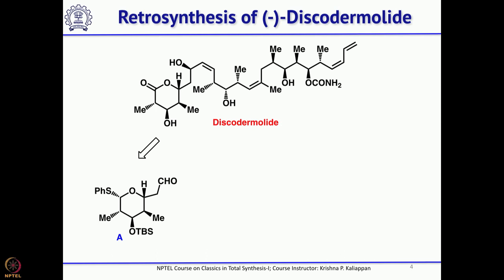The first disconnection on the left-hand side was to break this bond. The idea is to use the Nozaki-Kishi coupling reaction — if you have a triple bond and add to this aldehyde, you can get a propargylic alcohol that can be reduced to the corresponding allylic alcohol. That was the first key disconnection.